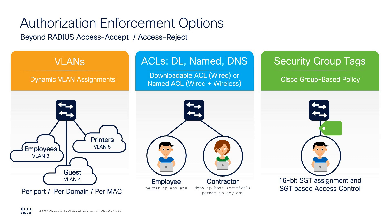Traditionally, organizations would look at leveraging VLANs as a way to segment devices. Unfortunately, when we start talking about industrial environments, in many cases these are devices that are statically IP-addressed, and the IP address is ultimately how these devices communicate. So modifying or changing the VLAN on the fly realistically can't work.